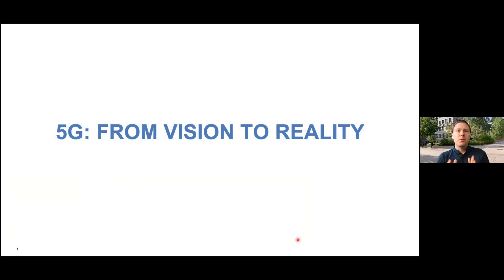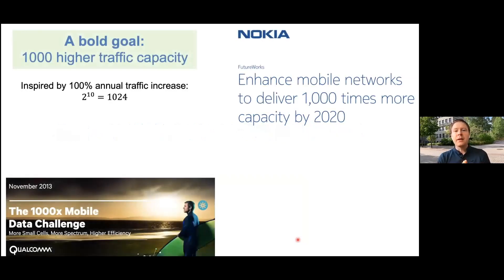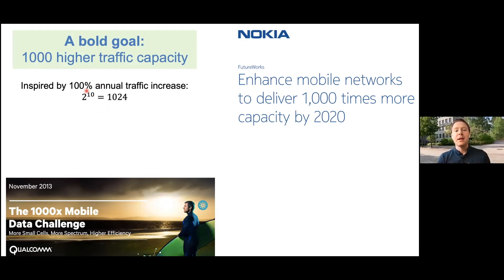When it comes to 5G, we can look back about 10 years and see what visions people had. Looking back to 2013, both Qualcomm and Nokia made a bold prediction that we need to build networks capable of delivering a thousand times higher data traffic. That was based on the idea that if data traffic doubles every year, then two to the power of 10 is 1024 - about 1000 times increase over 10 years. We saw it might only increase 60%, and in developed countries maybe only 40%, but having a goal of a thousand times is what's leading how we build new technologies.